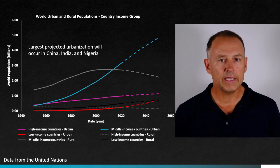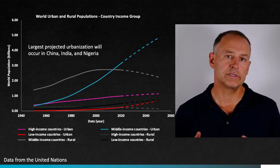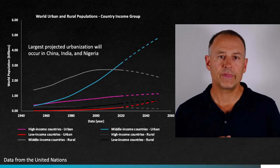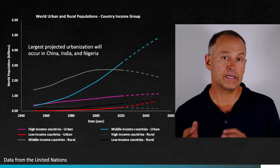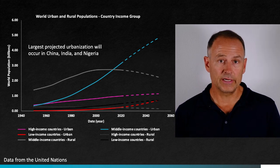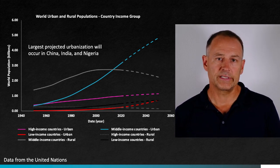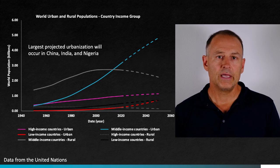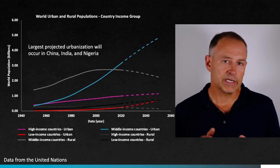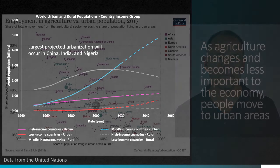The really striking pattern is in the urbanization of the middle-income countries, shown by the blue line, and the corresponding decline in rural populations shown by the highest gray line. In these countries, including China, there has been a major movement of people from rural areas to urban centers. In the lowest-income countries, you can see the projected increase in urban populations as we move toward 2050, shown in the red line.